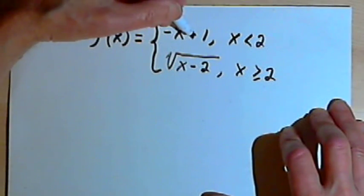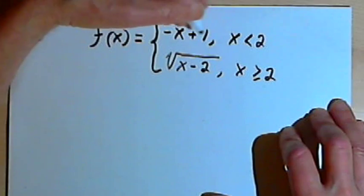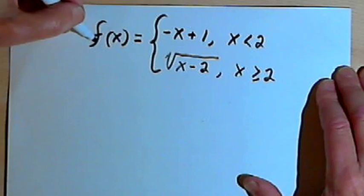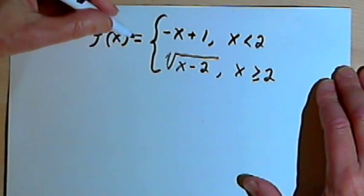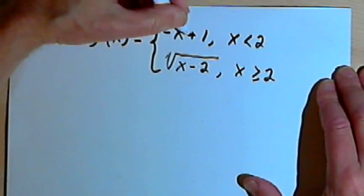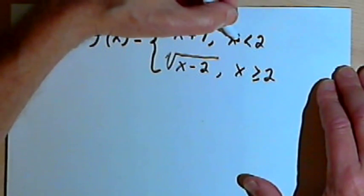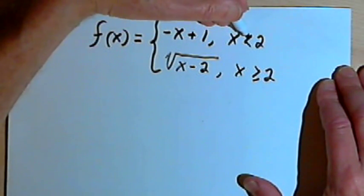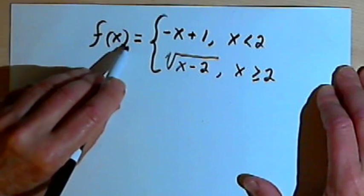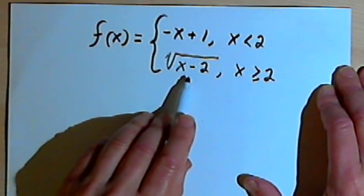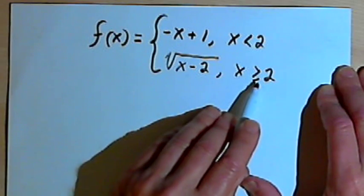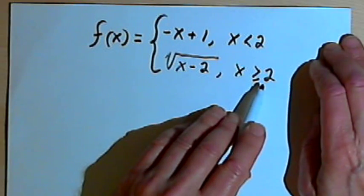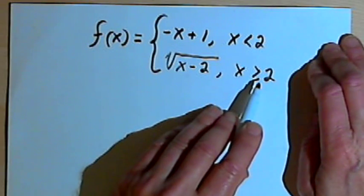For each of those pieces we're going to have a different rule or formula. So this example says that for f, f is going to equal negative x plus 1 whenever x is less than 2. That's what this first line tells me. But it also says that f is going to equal the square root of x minus 2 whenever x is greater than or equal to 2.